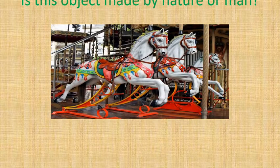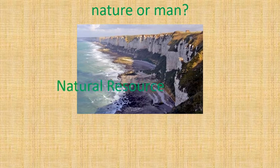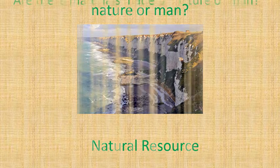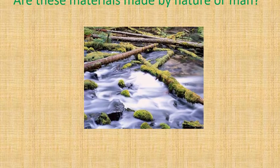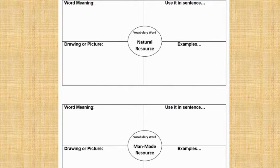Is this object made by nature or man? This is a man-made resource. Is this an image of things made by nature or man? This is an image of something made by nature. Are these materials made by nature or man? These are natural resources.